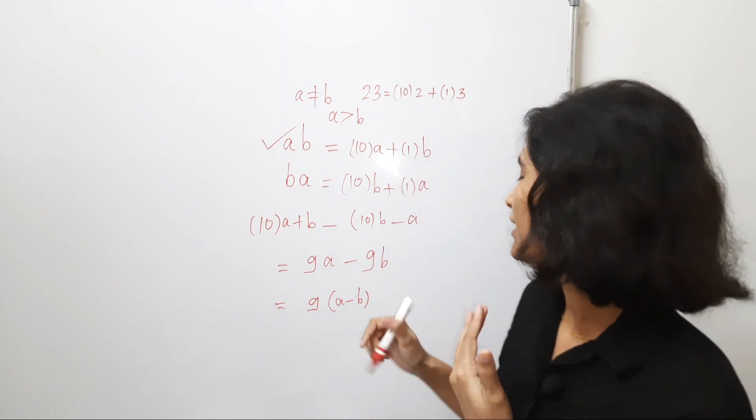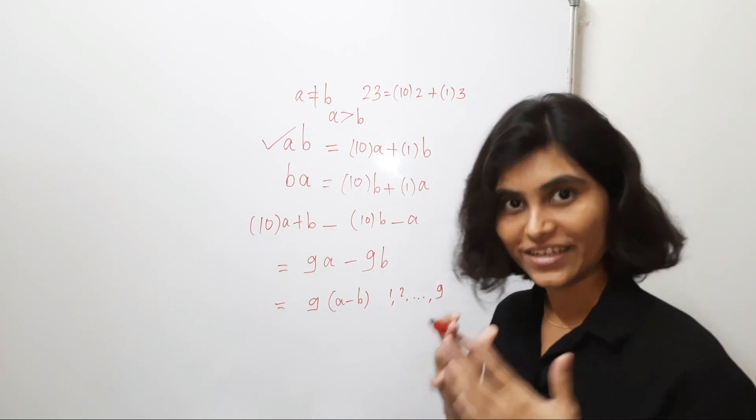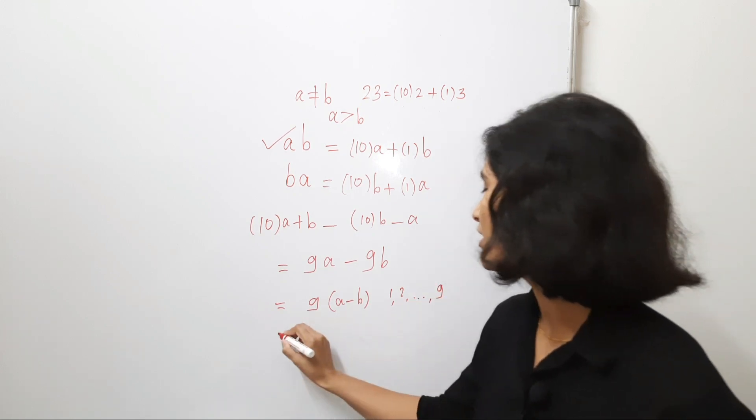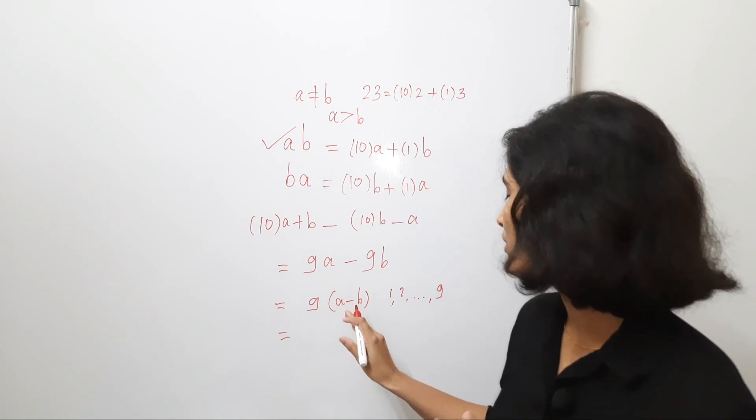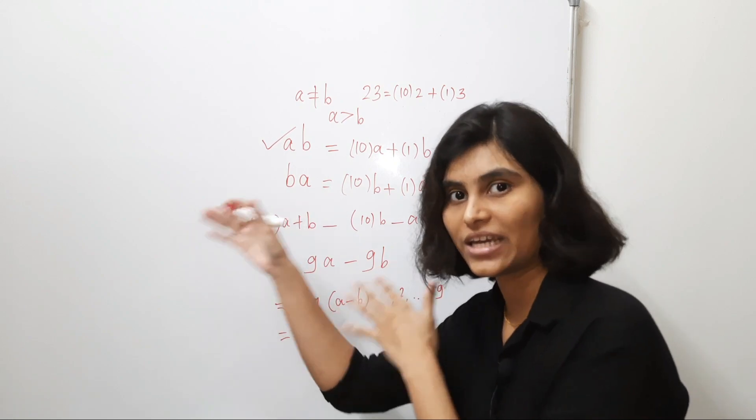So, it can be either 1, 2 and so on up to 9, right? That means this is just equal to 9 times 1, 9 times 2, 9 times 3 and so on up to 9 times 9.